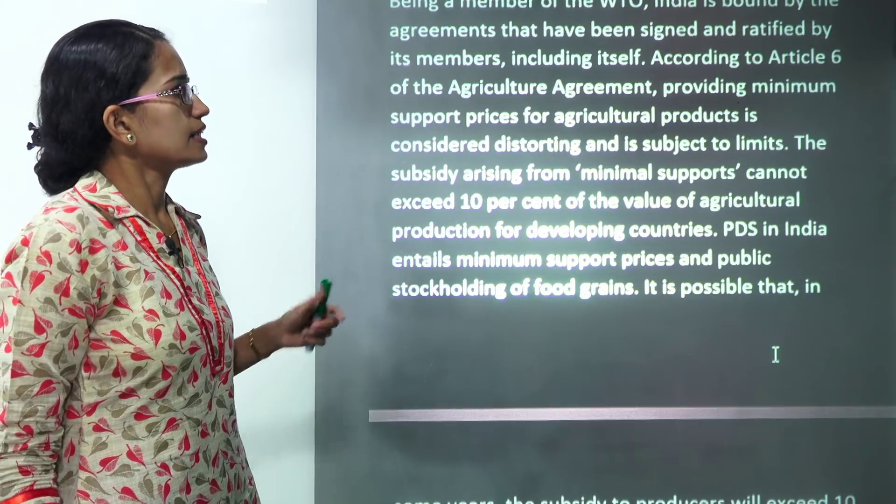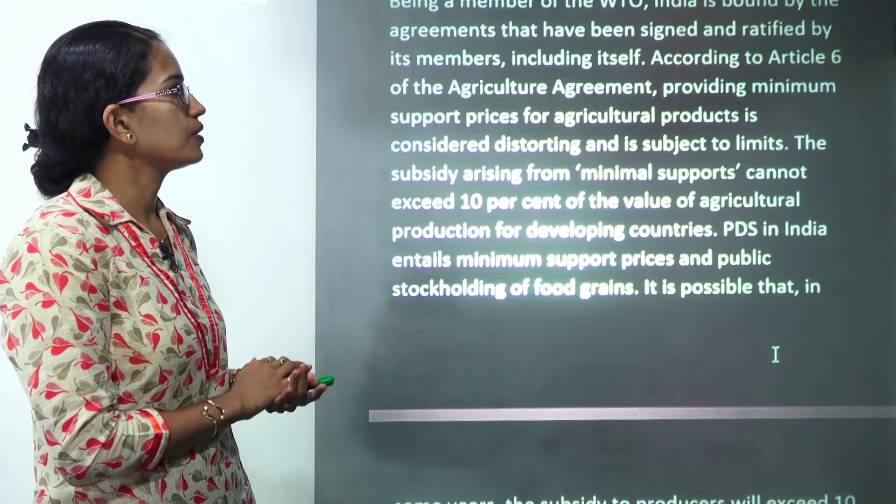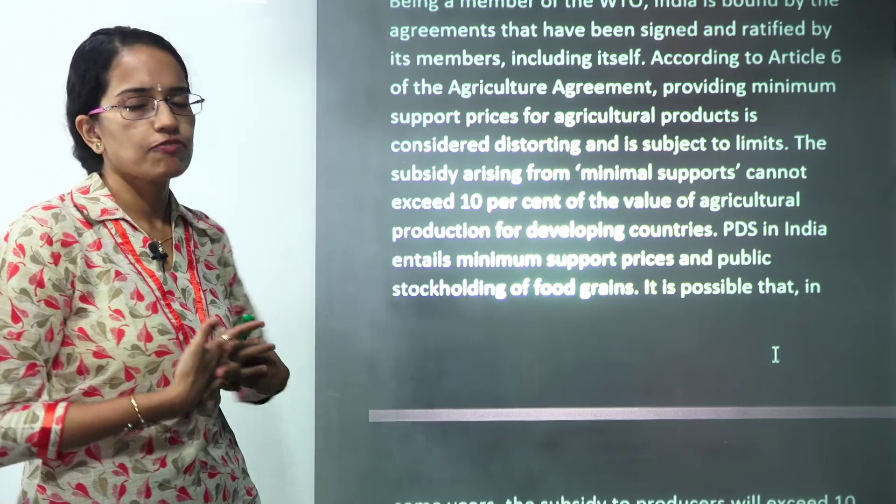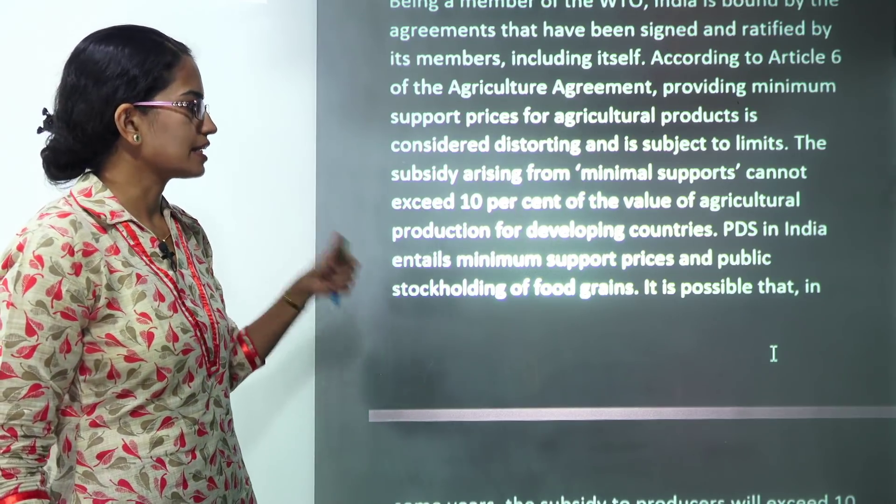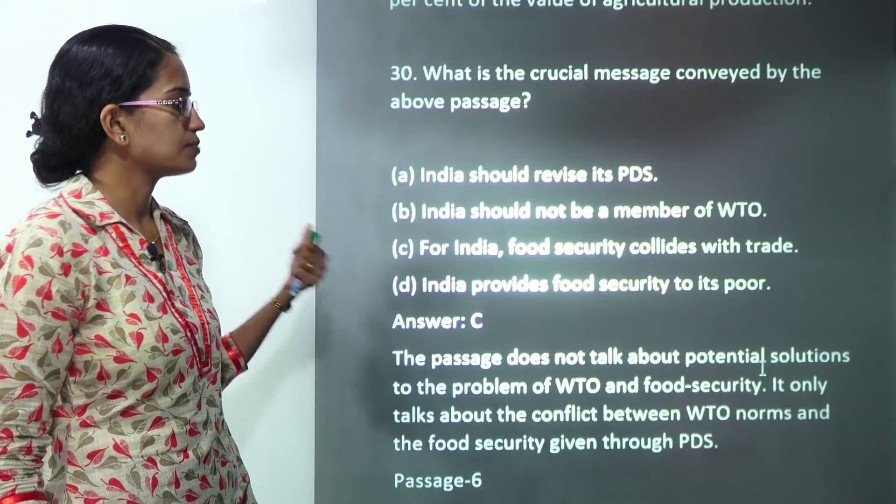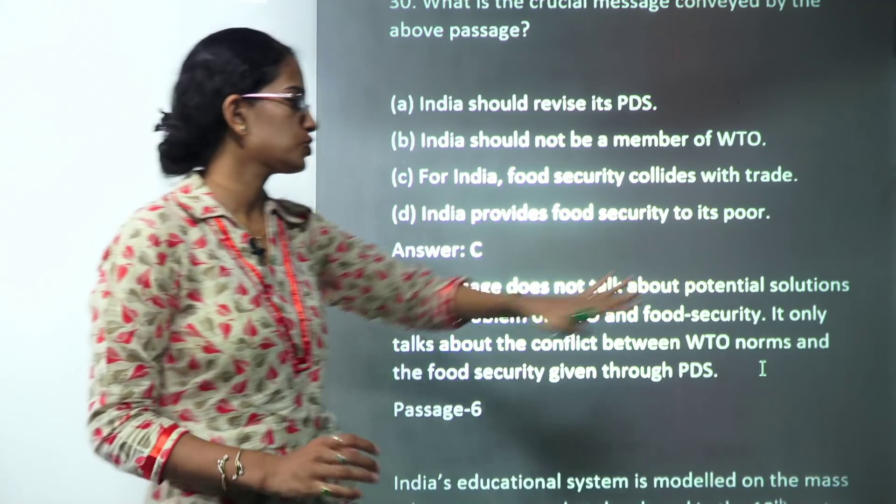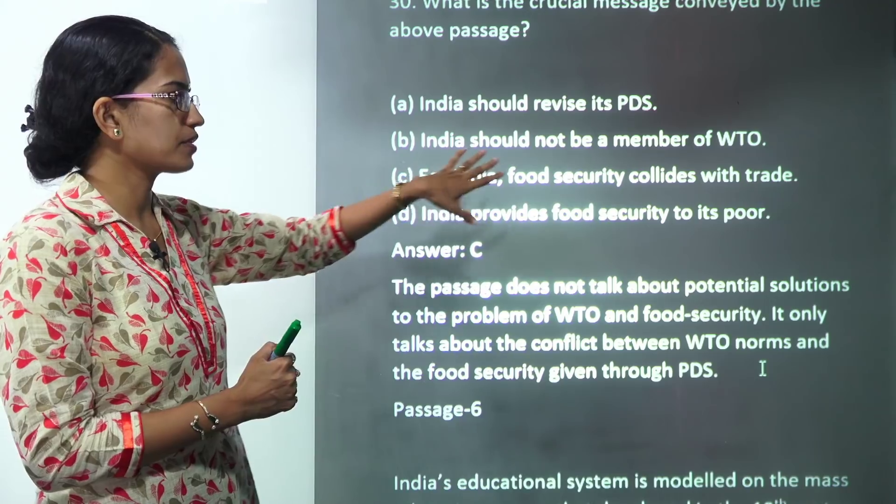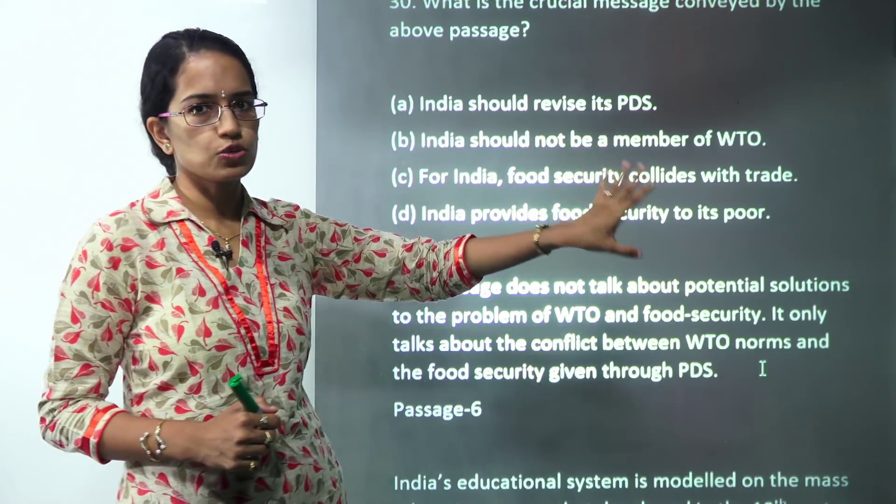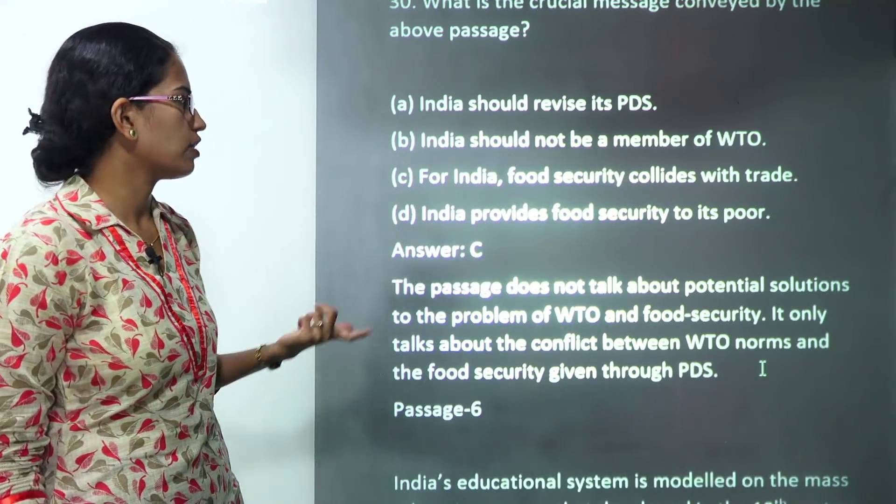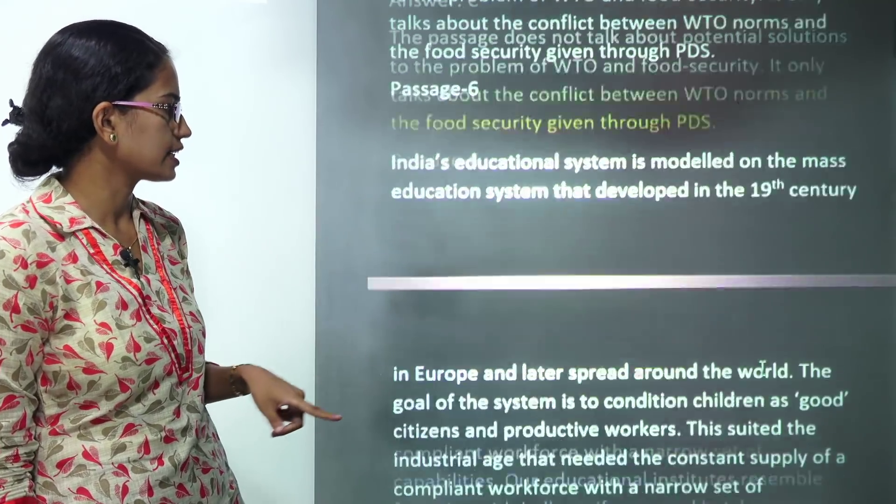The next is the WTO, India being a member of WTO. The agreements that have been signed for the food subsidy and the 10 percent subsidy that has been given has been controversial. So for India, food security collides with the trade issues. There is a conflict between the WTO norms and the food security that is given through PDS. So that's the whole idea of the passage. So C becomes the correct answer here.